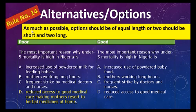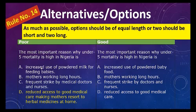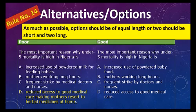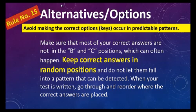Rule number fourteen: as much as possible, options should be of equal length — or at most two should be short and two long. Typically the longest option is the correct one, and test takers know this. The poorly written example has one very long option standing out. The better version ensures options are of nearly equal length.